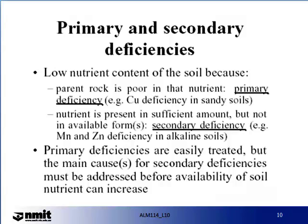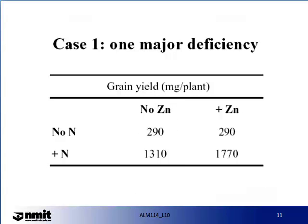Primary deficiencies are easily treated, but the main cause for secondary deficiencies must be addressed before availability of soil nutrients can increase. Here we have an example of a major deficiency. The grain yield varies depending on the nutrients available to the plant. Where there was no zinc and no nitrogen, the grain yield was 290 mg per plant. If nitrogen was added with no additional zinc, the grain yield jumped from 290 to 1,310 mg per plant. If zinc was added but no nitrogen supplied, the grain yield was still at 290 mg per plant. The optimal grain yield in this case study was achieved by adding both nitrogen and zinc, where the grain yield was 1,770 mg per plant — an economically ideal situation.